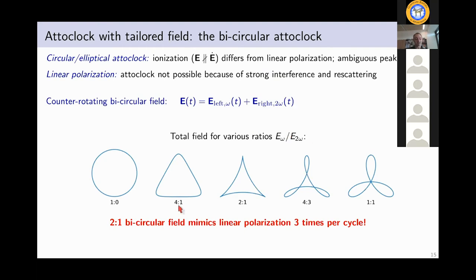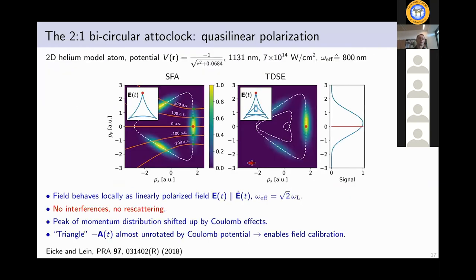Depending on the ratio of field strength, the total field shape will look like one of these pictures. And we are particularly interested in this 2 to 1 ratio because what does it do? It actually features three times per optical cycle indicated by the red circles, where the total field of this bicircular field mimics linear polarization. So if you look here, as we approach this endpoint here, the electric field basically moves on a line. So we can actually use this bicircular field to learn something about the ionization mechanism in linearly polarized light. And that's what we do in the following.